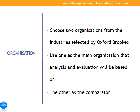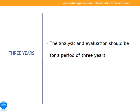The next driver is organization. It involves choosing two organizations from the industries selected, using one as the main organization that the analysis and evaluation is based on, and treating the other as a comparator. The wrong organizational choice will make or break you, and I'll be explaining how to choose an organization for Topic A very soon. Regarding the three-year requirement, remember to conduct your analysis and evaluation of the financial and business performance for each of the three years individually.